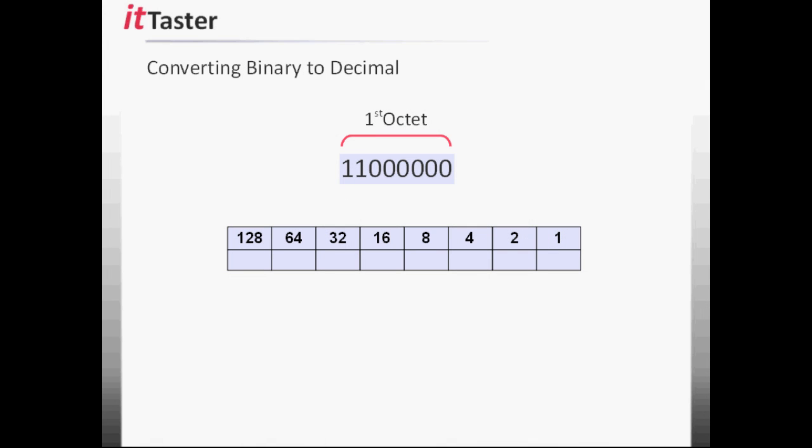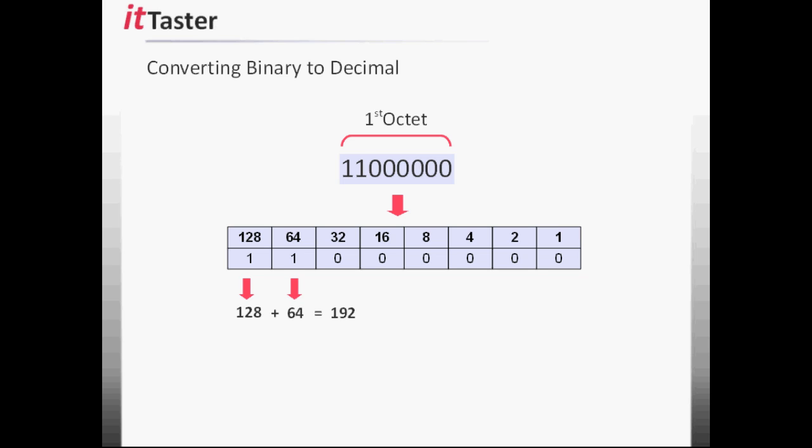To convert an IP address in binary format to decimal, we begin with the first octet working from left to right. We need to transfer the 8 bits of the first octet to our binary table and then add together the values of each bit that is set to on. 128 plus 64 equals 192, which is the value of the first octet in decimal.